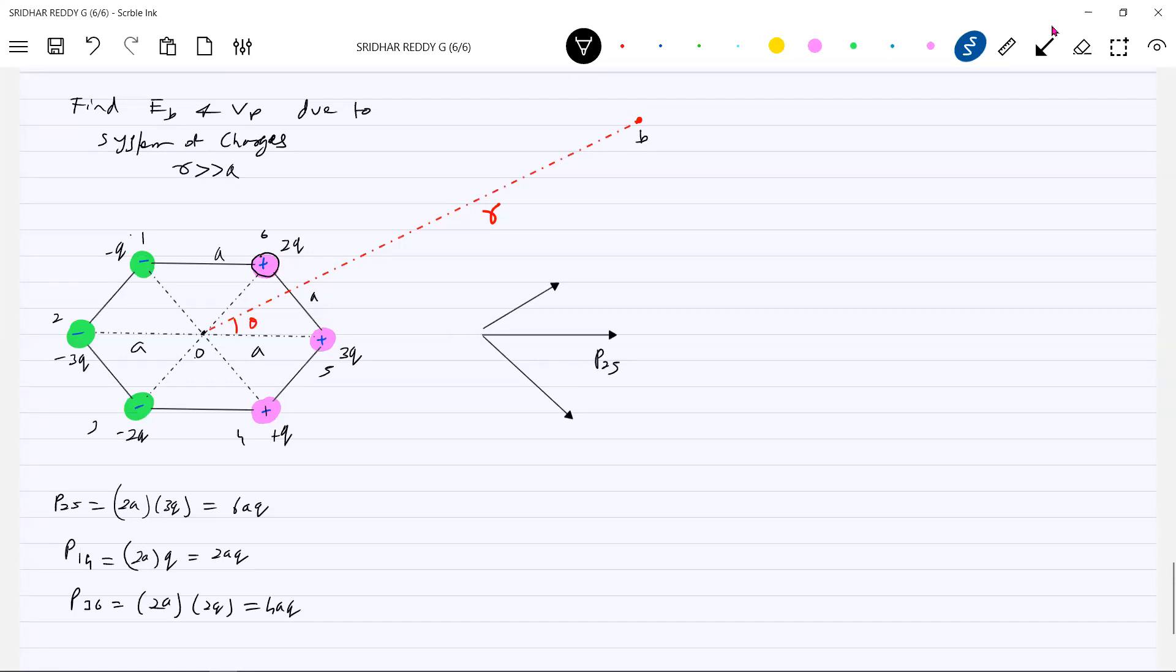Then we'll take the vector addition of these because dipole moment is a vector quantity. So P two five is in this direction, P one four, and P three six. What about the angles made by them? 60 degrees. Let's go for the X component. What is the X component of dipole moment? P two five plus P three six cosine 60. P two five will be 6AQ, P three six will be 4AQ times one half, P one four 2AQ times one half. This equals 9AQ.